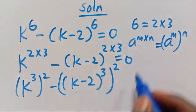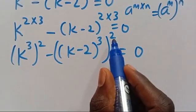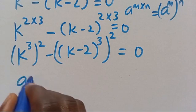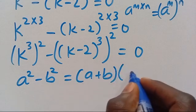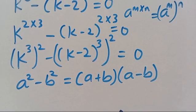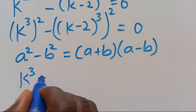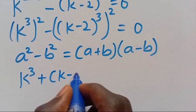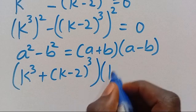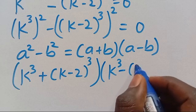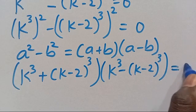Then let's set everything equal to 0. This one has power 2 and this one has power 2. Recall that when we have A squared minus B squared, it equals A plus B in brackets multiplied by A minus B in brackets. Applying it here, we have K to the power of 3 plus K minus 2 in parentheses to the power of 3 as the first factor, then multiplied by K to the power of 3 minus K minus 2 in parentheses to the power of 3, equals 0.